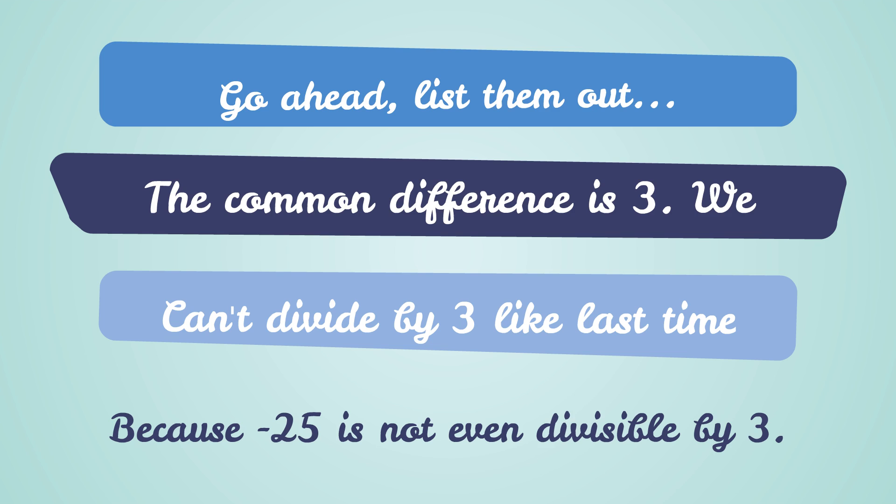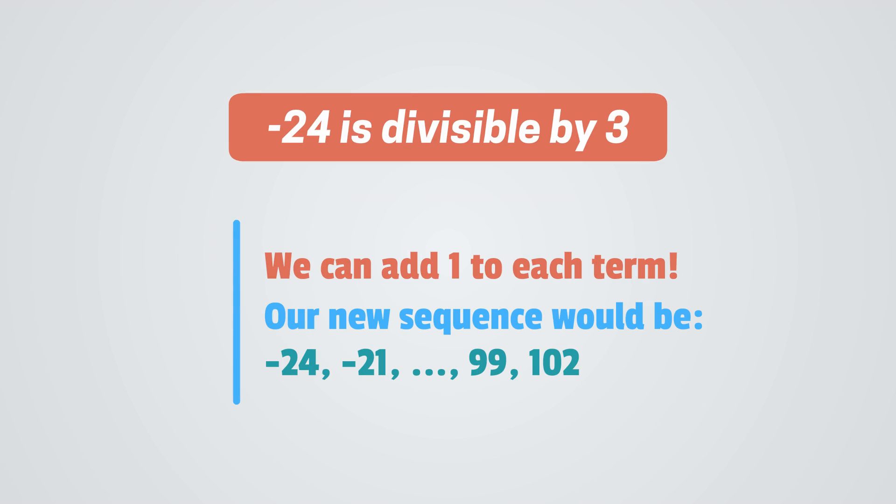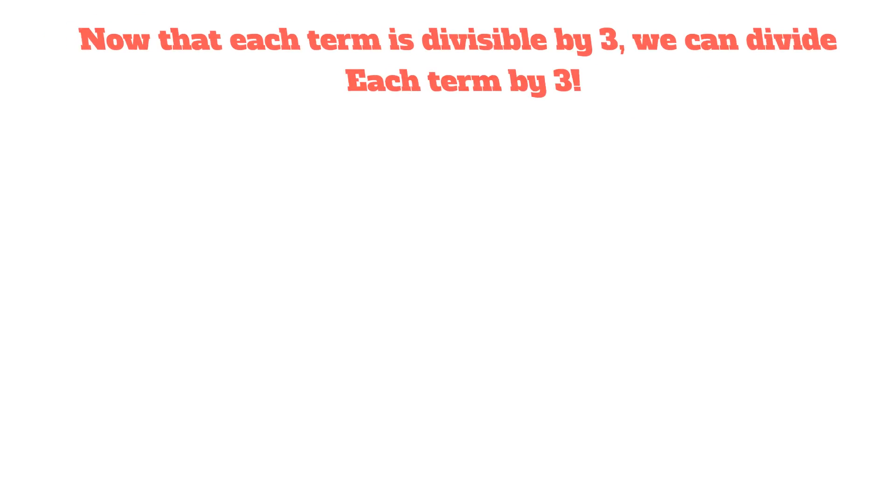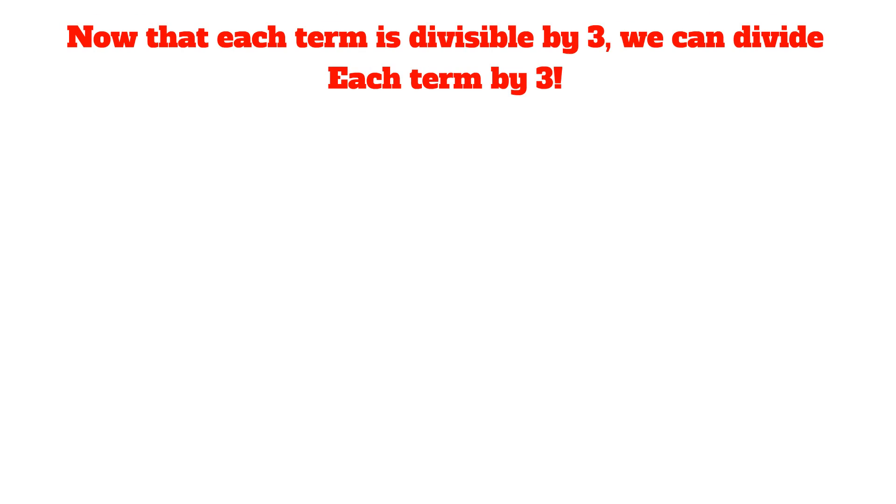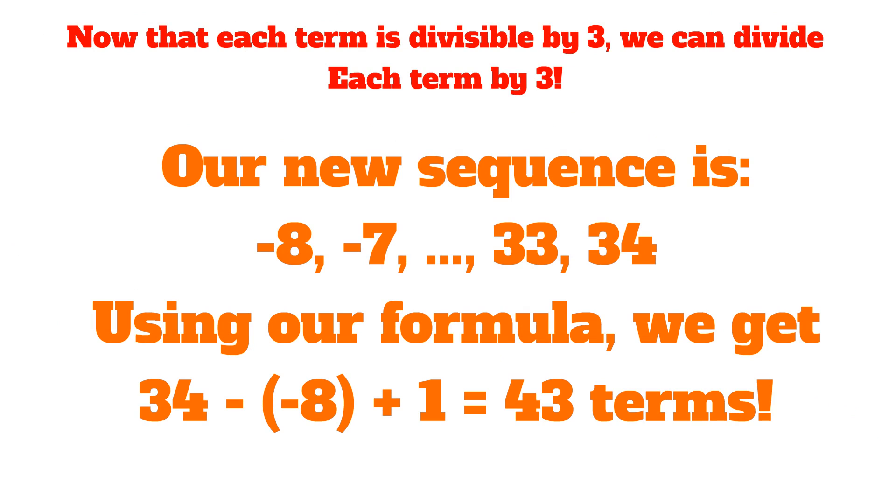The common difference is 3. We can't divide each term by 3 because negative 25 is not divisible by 3. It will give us a fraction, and we don't want fractions when trying to calculate the number of terms in the list. Negative 24 is divisible by 3. So we can add 1 to each term. Our new sequence would be negative 24, negative 21, all the way to 99, and 102. Now that each term is divisible by 3, we can divide each term by 3.